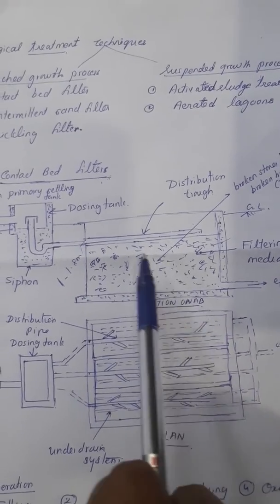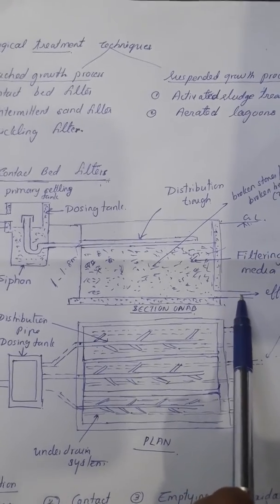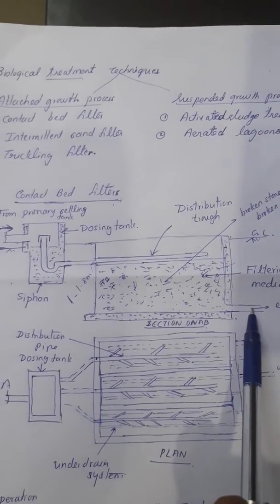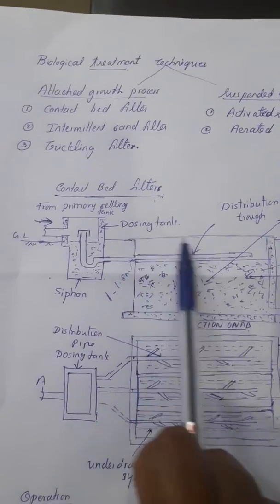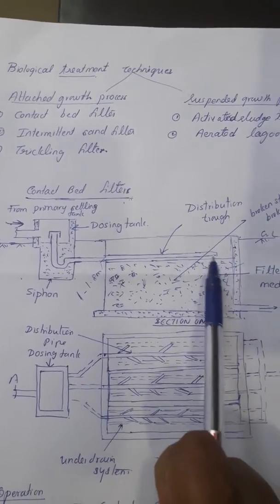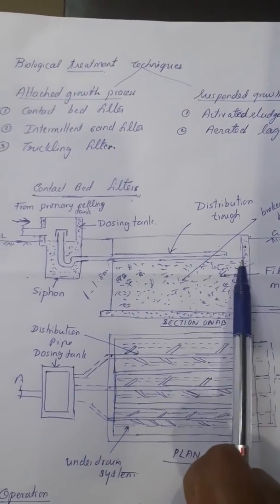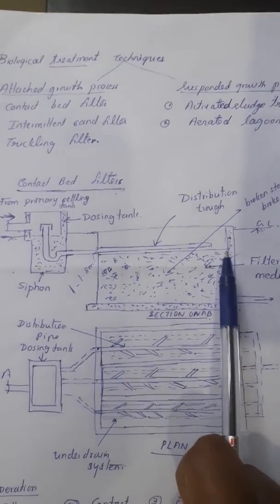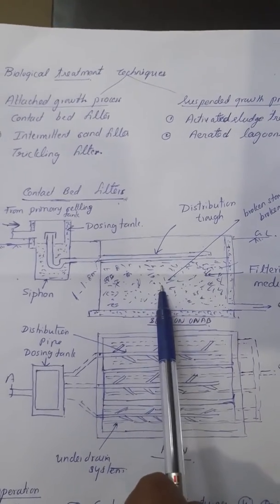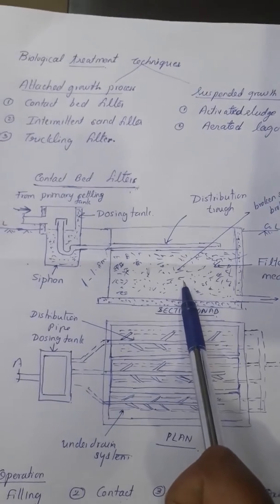From the under drain system, the effluent can be sent to the secondary sedimentation tank for settling out the oxidized organic matter. The sewage is uniformly applied over the entire surface of the contact bed using the distribution truss. The sewage is uniformly spread onto this contact bed, and the rate of loading is very low, varying from 4000 to 6000 cubic meters per hectare per day.